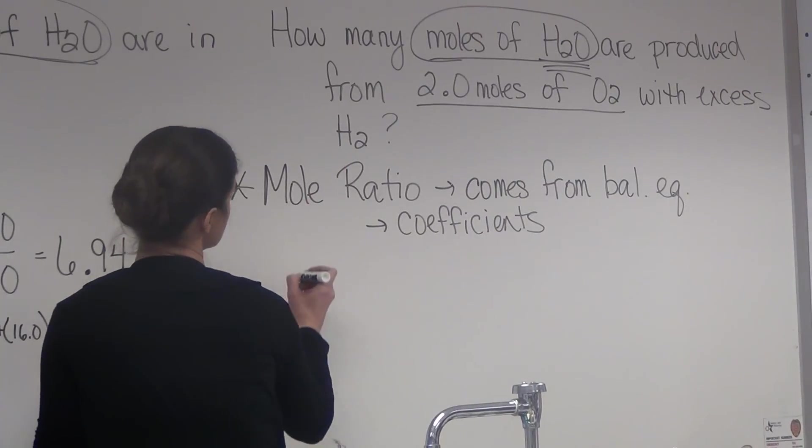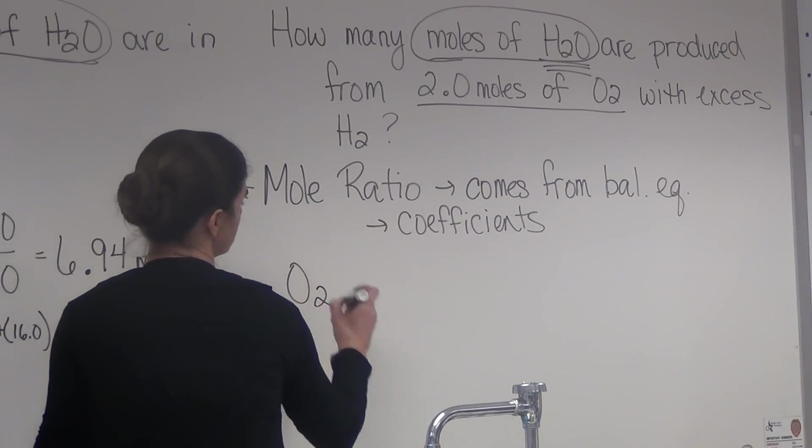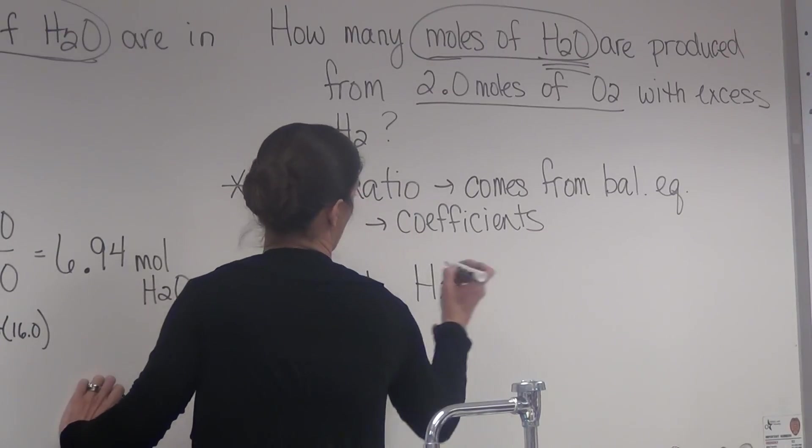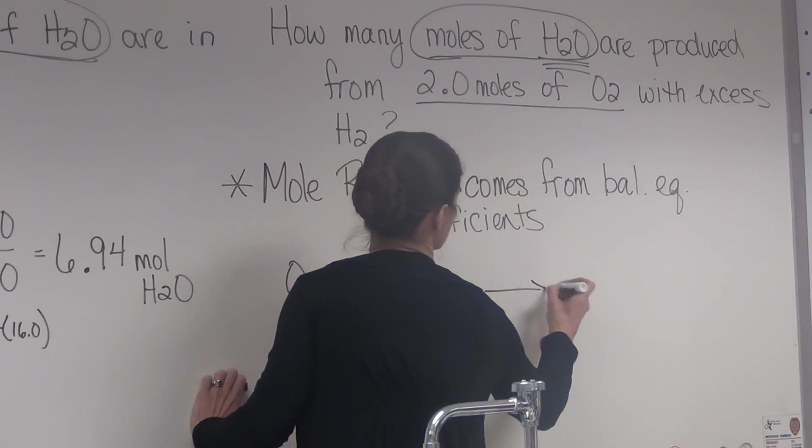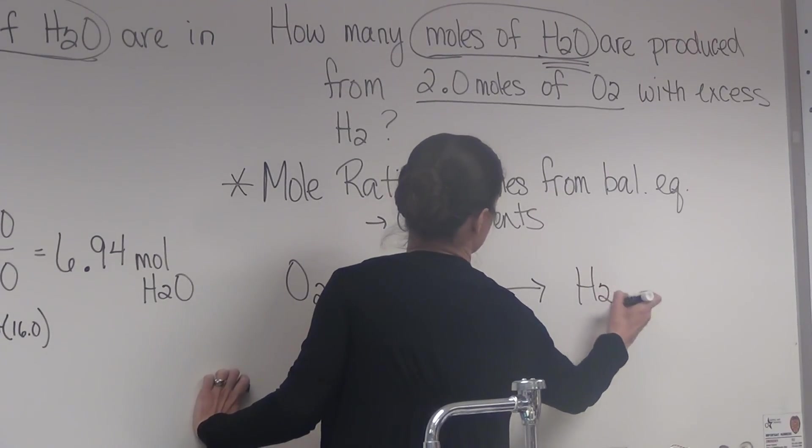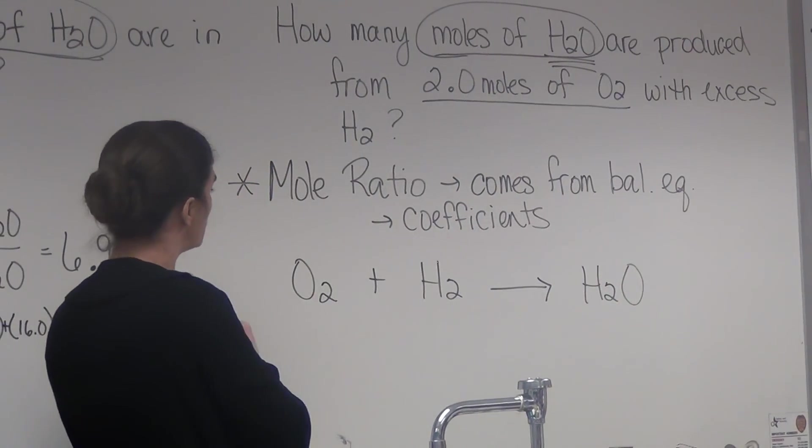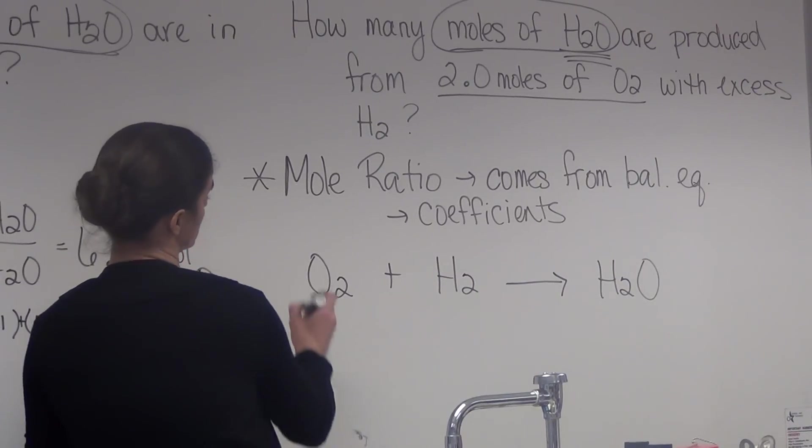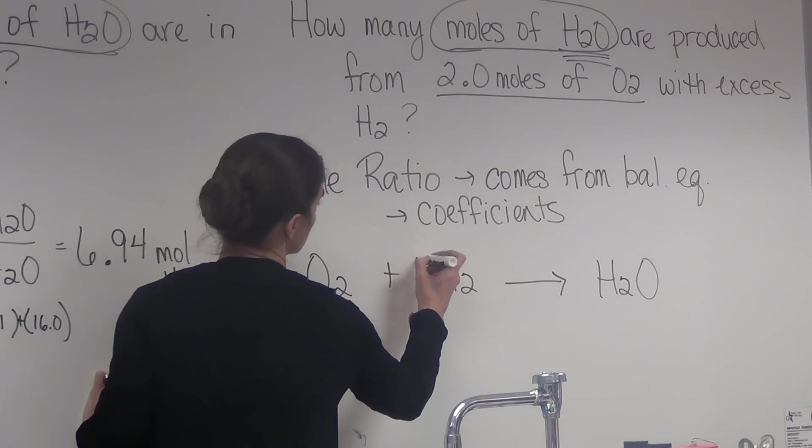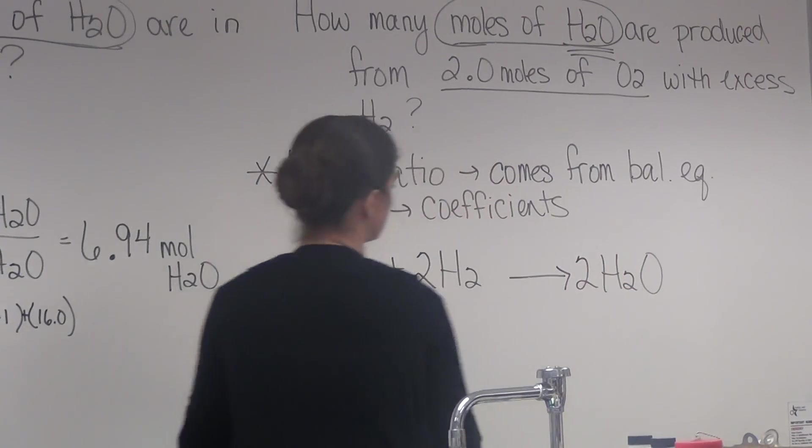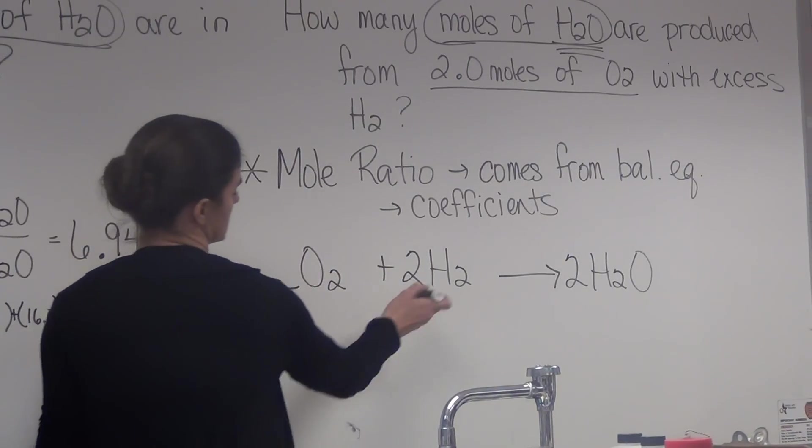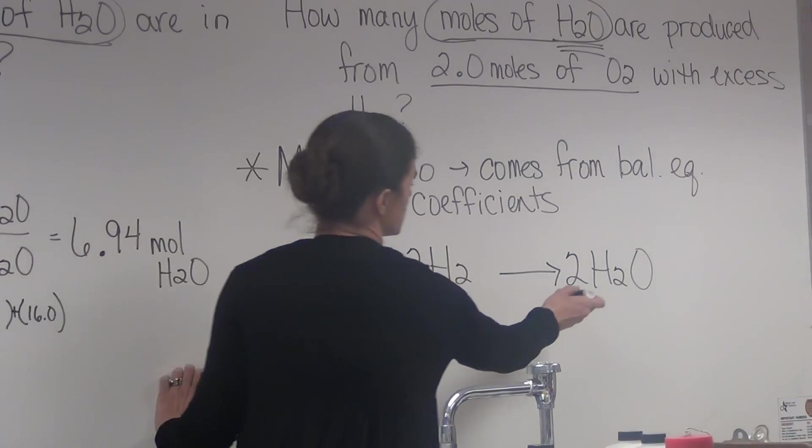So in this case, it tells us that oxygen is reacting with hydrogen to produce water. We're going to use our balanced equation. We're going to put a 2 here and a 2 here. So these coefficients is what we get our mole ratio from.